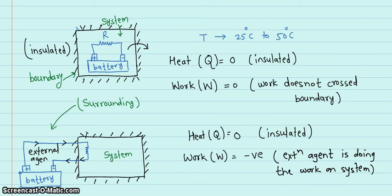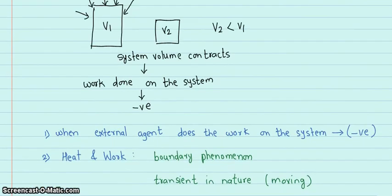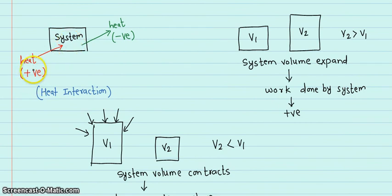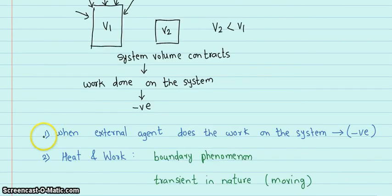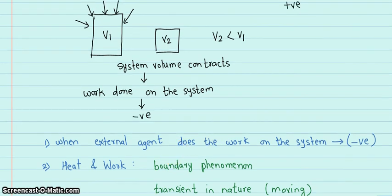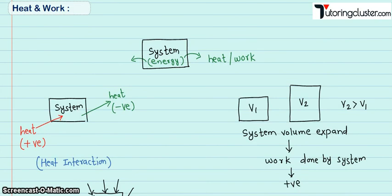Let's quickly revise the sign conventions. If heat is supplied to the system it is positive; if heat is withdrawn it is negative. If work is done by the system it is positive; if work is done on the system it is negative; and if an external agent is doing work on the system it is negative. I hope the heat and work interaction between system and surrounding is now clear. Please like this video, join the Telegram channel via the link in the description, and don't forget to subscribe. Thank you.